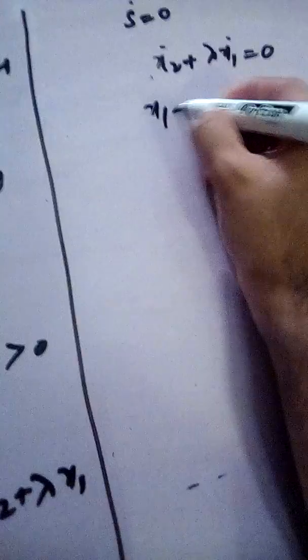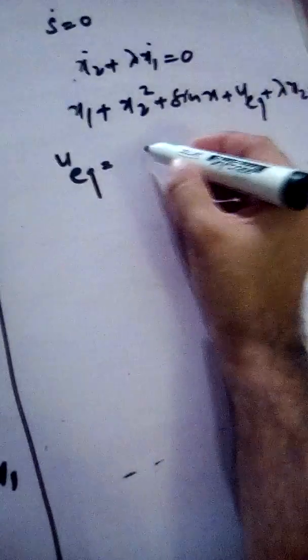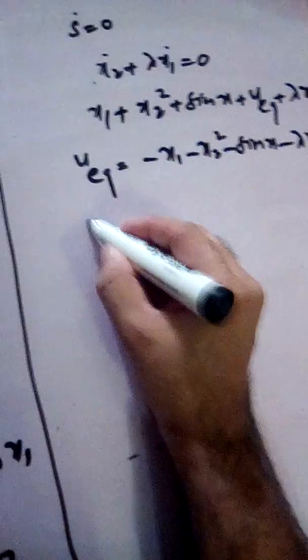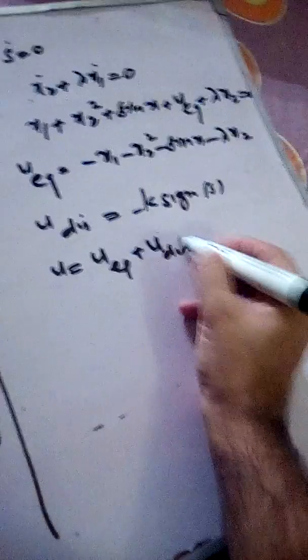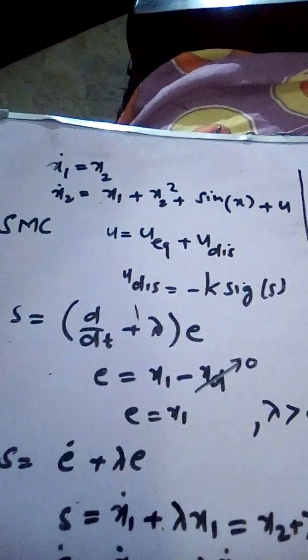Substituting from the state equations into this condition, we solve for the equivalent control. u_equivalent turns out to be: minus x1 minus x2 squared minus sine of x minus lambda times x2. This is our u_equivalent. Along with this, we have the discontinuous part, minus k times sign(s). Together, u_equivalent plus u_discontinuous form the complete control law that brings the system trajectories to zero in finite time.